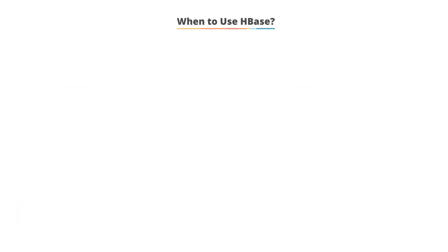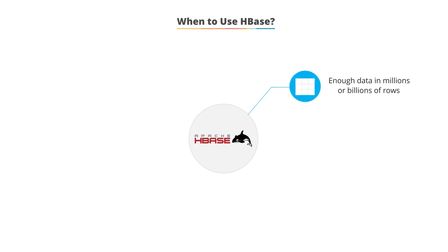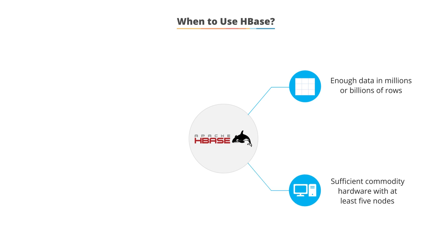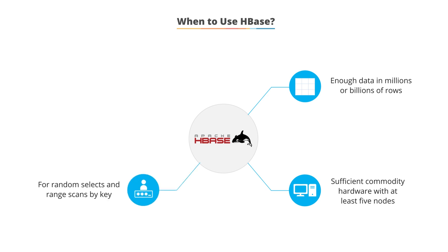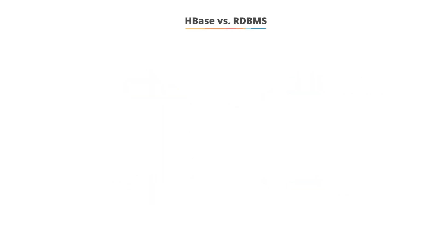When should I use HBase? HBase is used when you have enough data — in millions or even billions of rows. It can be used when you have sufficient commodity hardware with at least five nodes. Developers can use HBase for random selects and range scans by key, and when you have a variable schema.